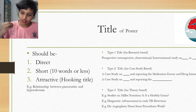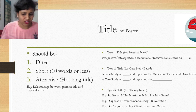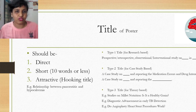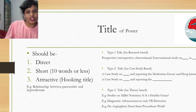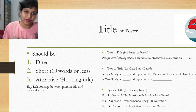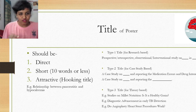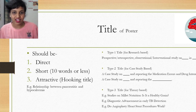The title should be direct, short, and have hookup points. For example: 'Relationship between pancreatitis and hypocalcemia' — does that grab your attention? Yes. I chose this example because I mentioned three types of poster orientation, and for theory-based posters it's harder to justify the topic, so the title must be especially attractive.